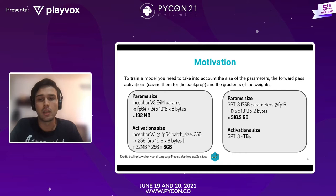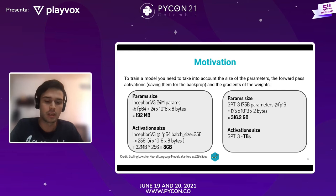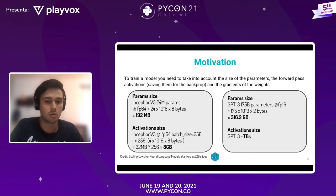También están los gradientes de los pesos que también se deben almacenar. En un modelo común como el Inception-B3, que tiene 24 millones de parámetros, solo el modelo puede representar alrededor de 200 megas, pero cuando hablamos de las activaciones de ese mismo modelo para un batch size común como 256, ya vamos a encontrar que eso ocupa una memoria de 8 gigas, que ya es similar a la memoria de una sola GPU.